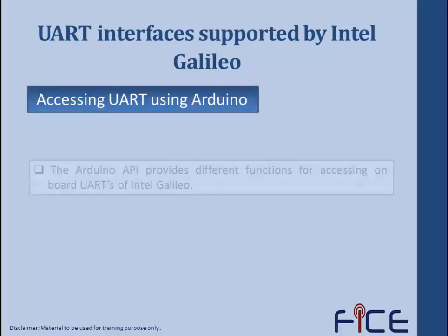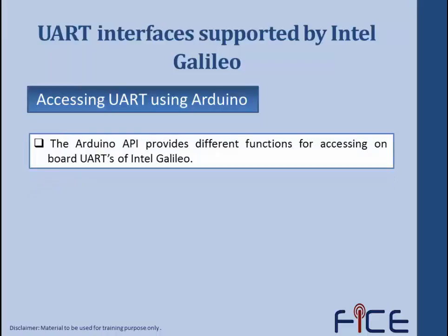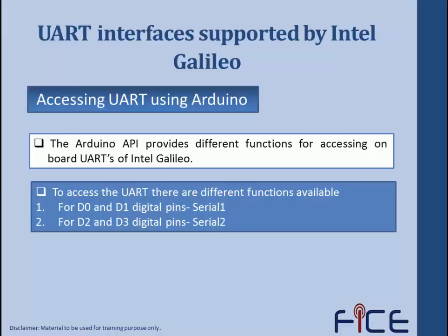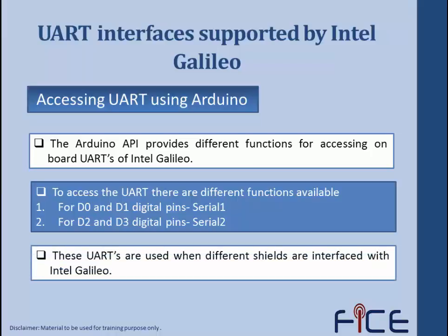The Arduino API provides different functions for accessing the onboard UARTs of Intel Galileo. Arduino provides different libraries to access the UART present on the Intel Galileo. For accessing digital pins D0 and D1 UART, we use Serial1. For accessing digital pins D2 and D3, we use Serial2. These UARTs are used when different shields are interfaced with Intel Galileo — those shields access the UART using either Serial1 or Serial2.